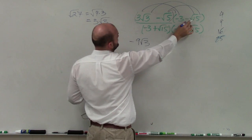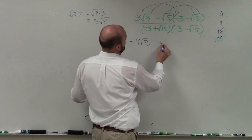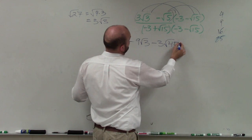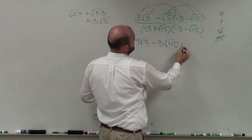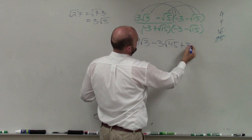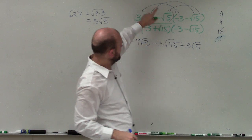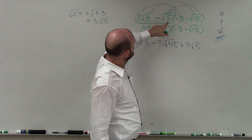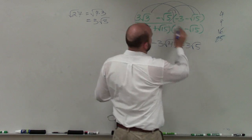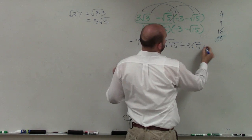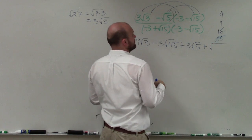3 times negative square root of 15 is going to be negative 3 square root of 45. Then negative square root of 5 times negative 3 is going to be positive 3 square root of 5. And negative square root of 5 times negative square root of 15 is going to be positive square root of 75.